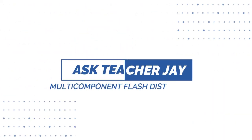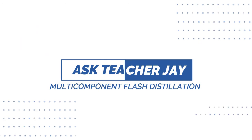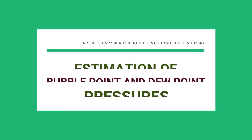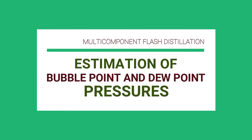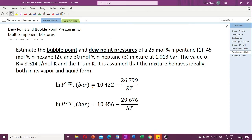Hi guys, it's teacher Jay. For this video on multi-component flash distillation, we're going to talk about the estimation of dew point and bubble point pressures at a constant temperature. This is the second part of the estimation of dew point and bubble point data for multi-component mixtures. If you haven't watched the video on dew point and bubble point temperatures, I will post the link below.